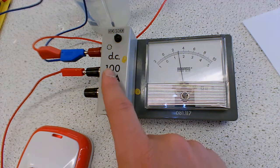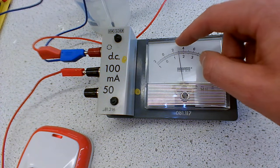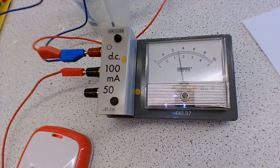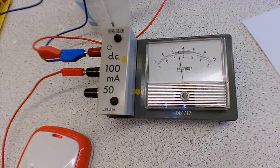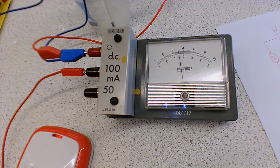So 10 on this scale represents 100 milliamps. At the moment this is at 3 on the scale, so that's 30 milliamps at this point. So a temperature of 80 degrees, I'll record this in my table.